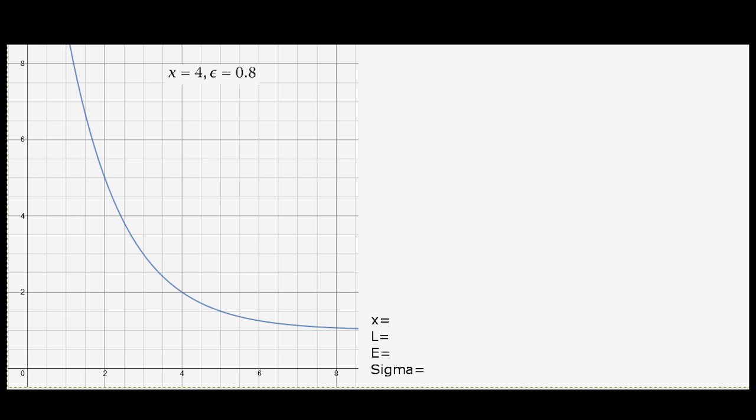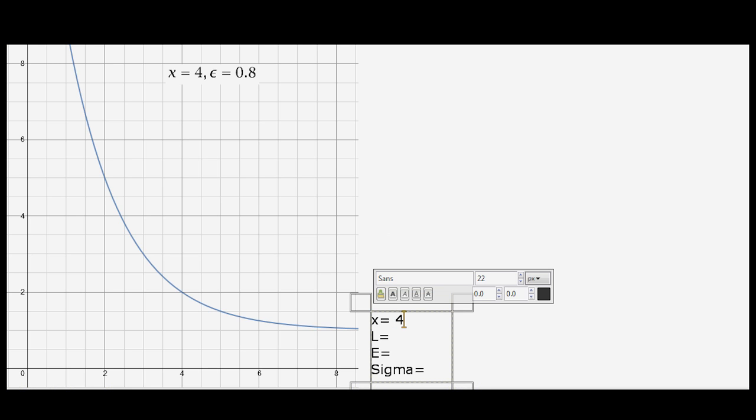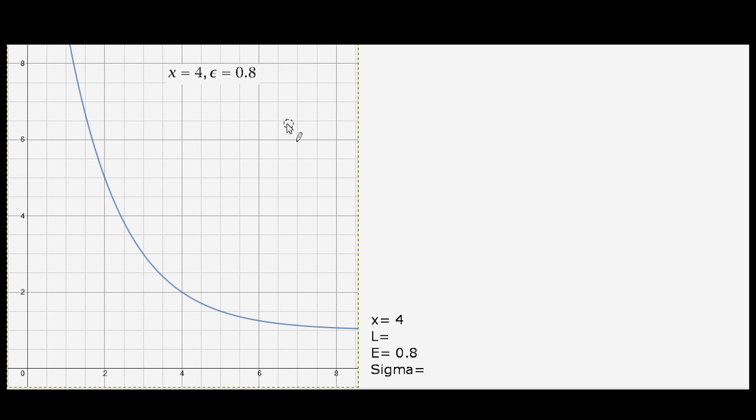The four values we need are listed here as x, L, epsilon, and sigma. We have x and epsilon being 4 and 0.8 already, since that was given to us, and since the L value is just the y unit at the given x, we can graphically plot on the function where x is and find L to be 2.